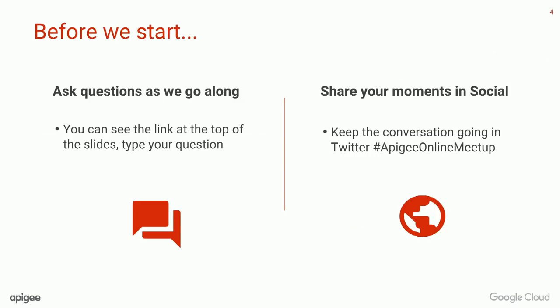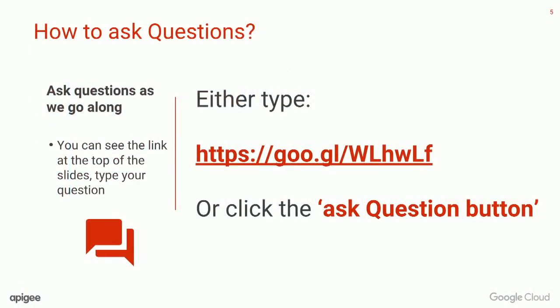Before we start, a couple quick reminders. First, we encourage you to ask questions throughout the duration of the program. In order to ask questions, go ahead and click the link that will be shown in the next slide, or you can use the Ask a Question button that will be shown on your view screen. Additionally, we'd love for you to share your takeaways and thoughts on social media using the hashtag ApigeeOnlineMeetup. To ask your questions, use the link provided on the slide, or use the Ask Question button available in your view pane.